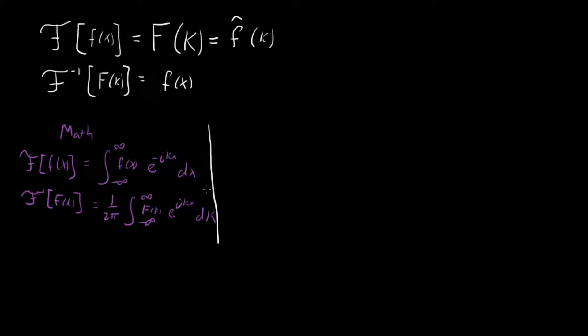So there's that one. There's also what's sometimes called the engineers Fourier transform, and this is the one that you see most often on Wikipedia. And for this one, you have that your Fourier transform of f of x is equal to integral minus infinity to infinity f of x, and then our exponential is e to the minus i 2 pi k x d x. So we get this extra factor of 2 pi up in there.